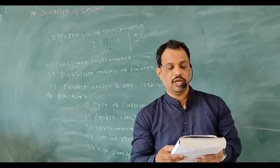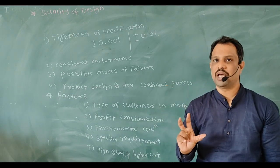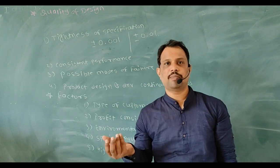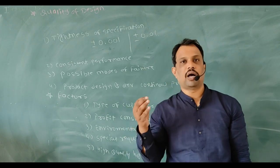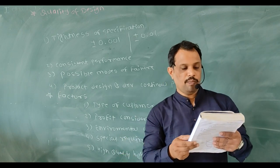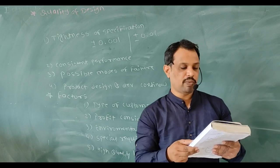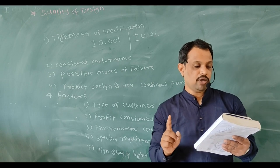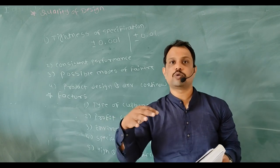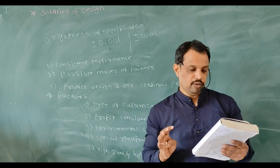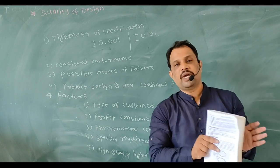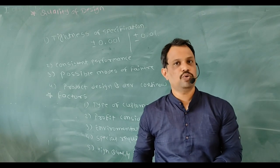Next is profit consideration. Any company knows that the tighter the tolerance, the higher the product cost. If your customer base cannot afford a high-priced product, there is no point manufacturing it. From the company's point of view, profit is more important. It is not necessary that the company manufactures 100% quality products. The market segment that management desires to cater to should be considered, and profit should be maximized by producing products in different grades to suit different types of customers.